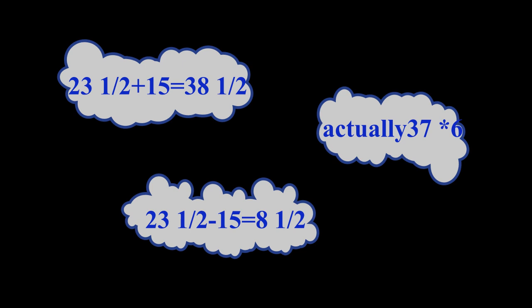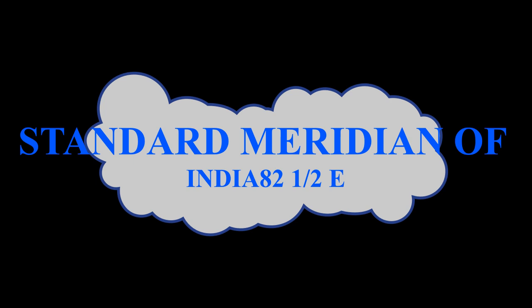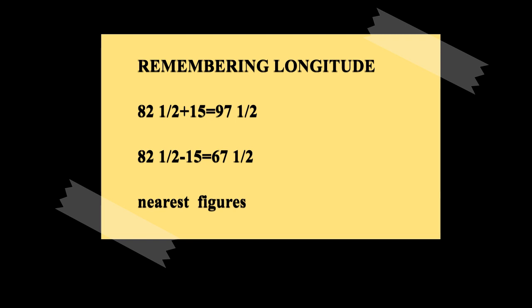For longitudes, the standard meridian of India is 82.5 degrees E, which also passes through the middle of India. The longitudinal span is roughly 30 degrees. Apply the same formula: 82.5 plus 15 gives approximately 97.5, close to 97 degrees 25 minutes. 82.5 minus 15 gives 67.5, close to 68 degrees 7 minutes.